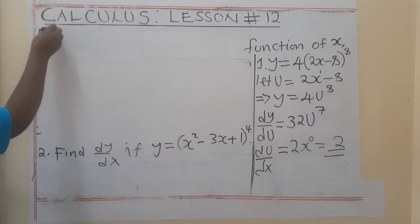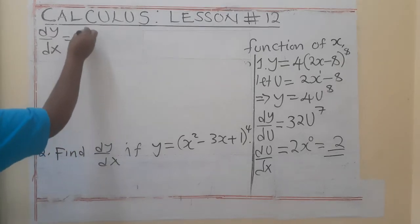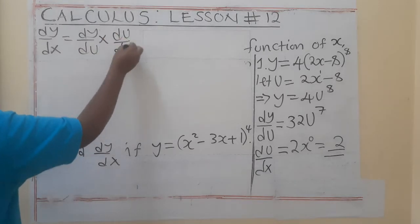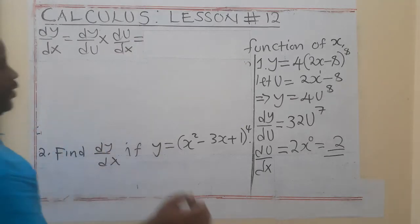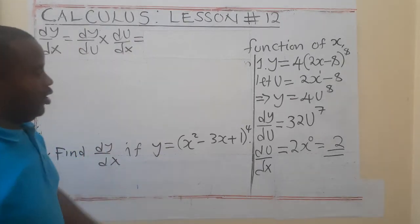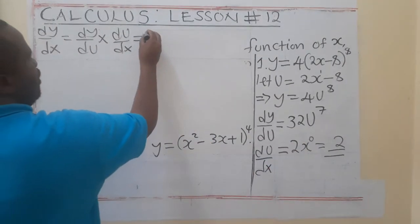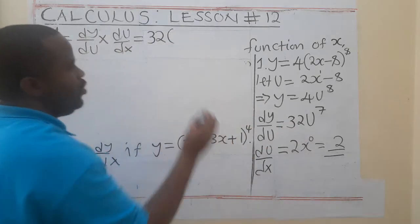So, dy/dx, we say, it should be dy/du by du/dx. What does this mean? We will say, okay, what is our dy/du? dy/du is this one. So, I will say, 32. Then, instead of putting u here, I will say, what is my u? My u is 2x minus 8.